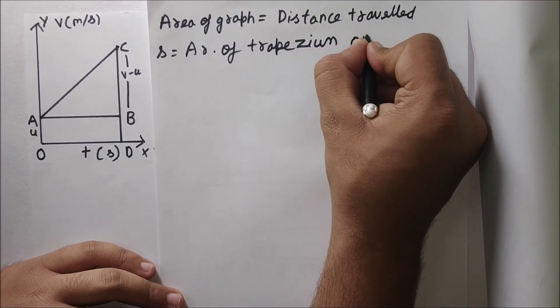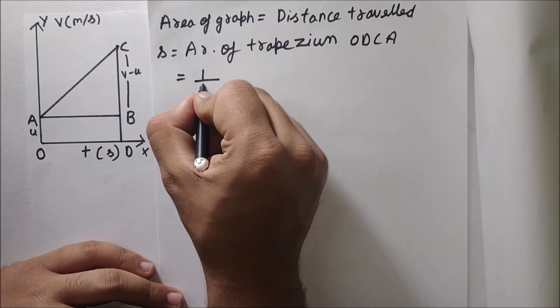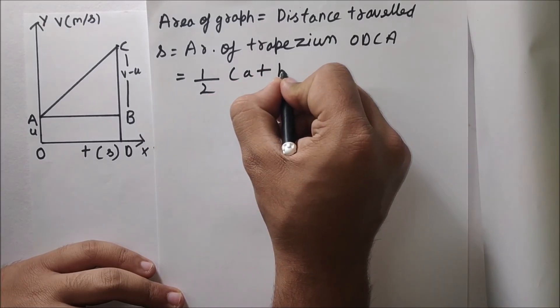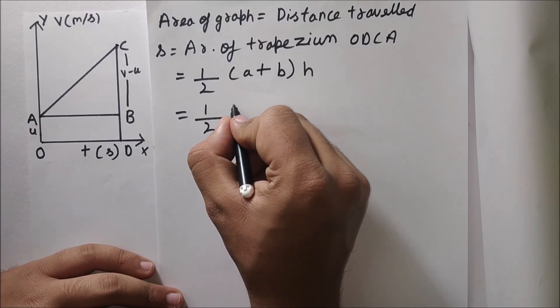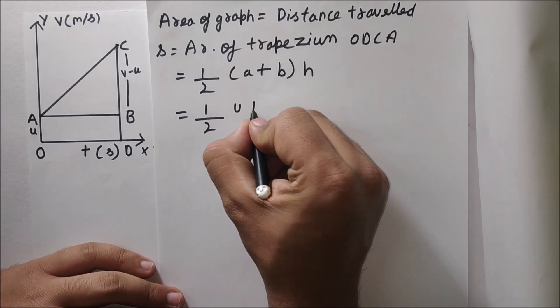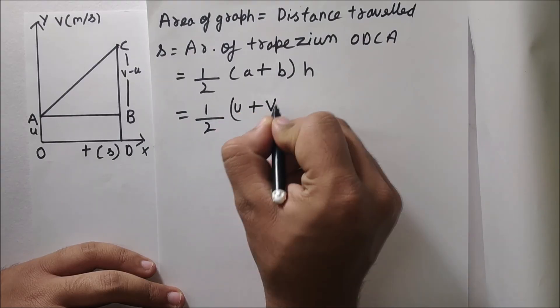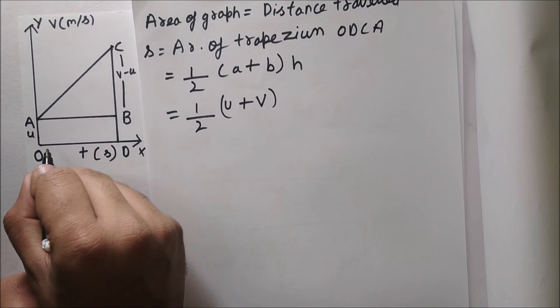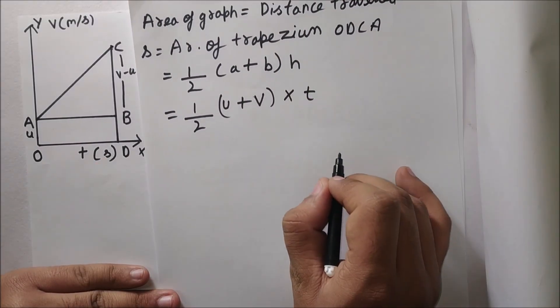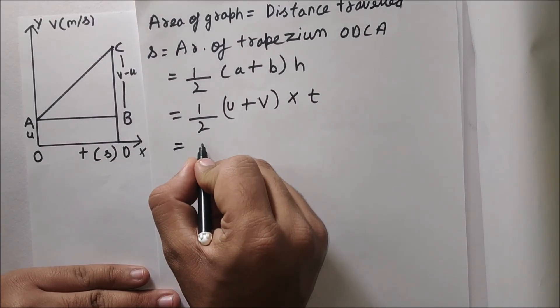Area of trapezium, the formula is half a plus b into h. A and b are parallel sides and h is the distance between both the sides. So we need to write half, now instead of a that's OA so that's u, plus b, b is v, so we need to write u plus v, and the height is t as OD.